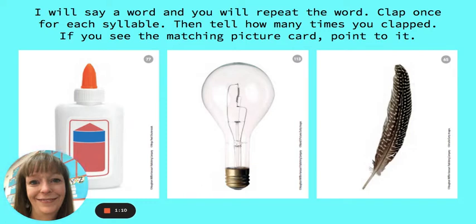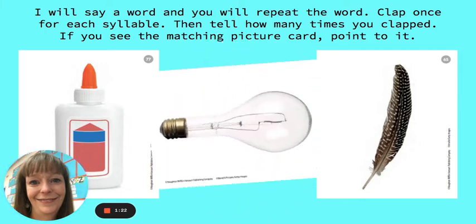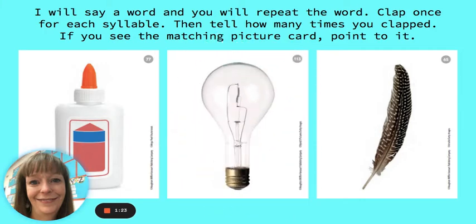The first one is light bulb. That's right — we say light bulb. So there are two syllables, and there's the picture.